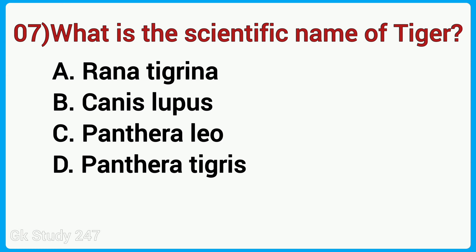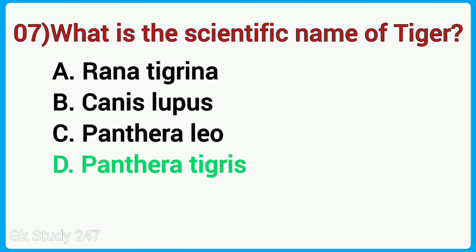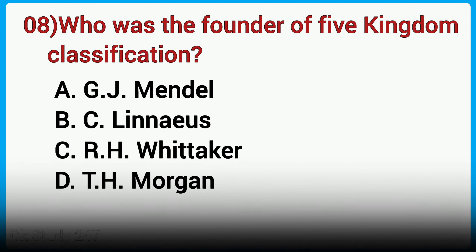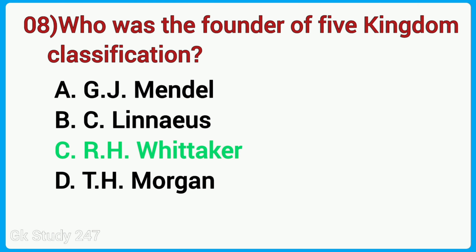What is the scientific name of tiger? Answer is Panthera tigris. Who was the founder of five kingdom classification? Answer is R. H. Whittaker.